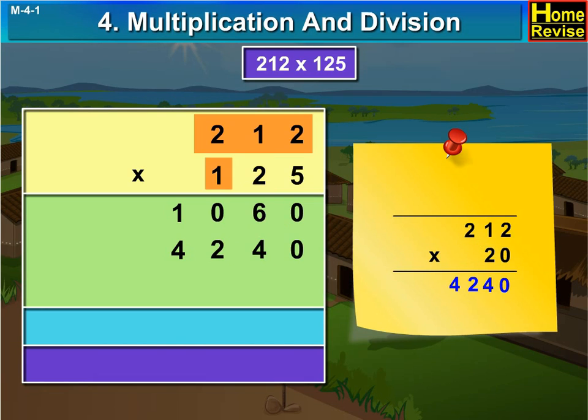And now, we multiply 212 by 100. 1 twos are 2. 1 ones are 1. 1 twos are 2. At the end, we add 2 zeros.